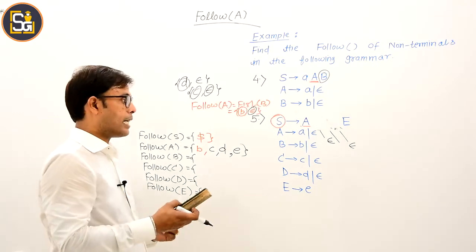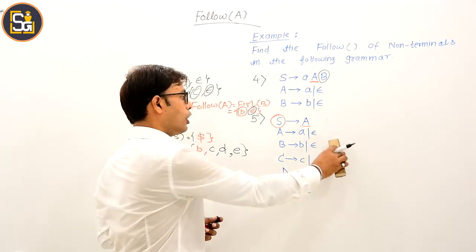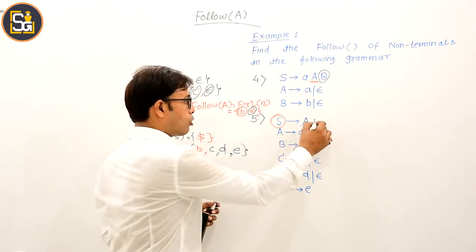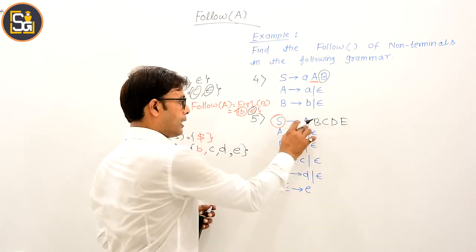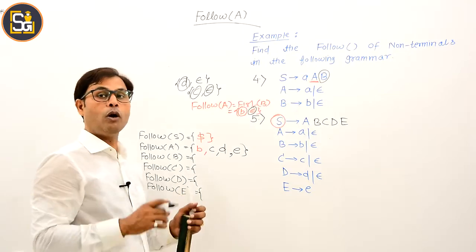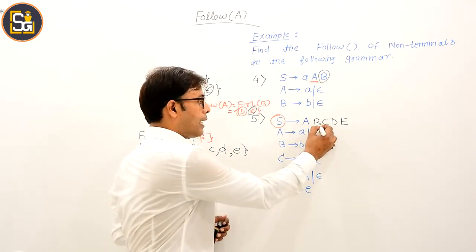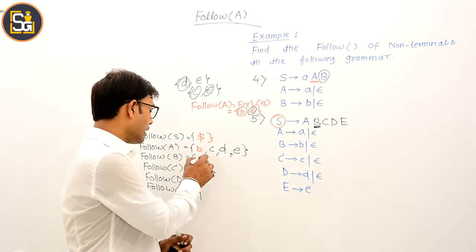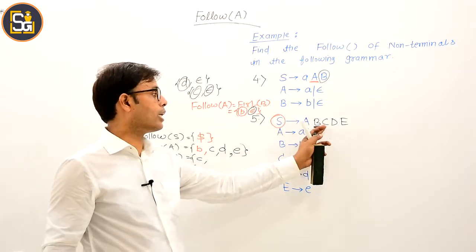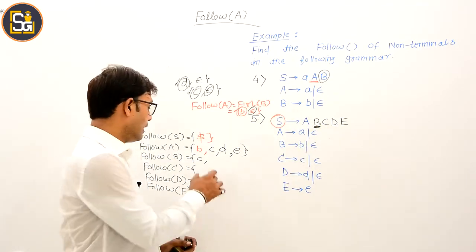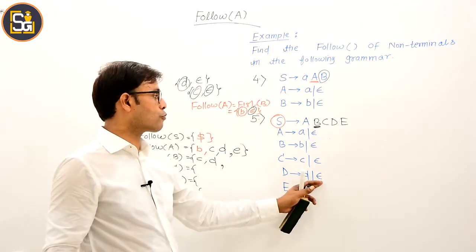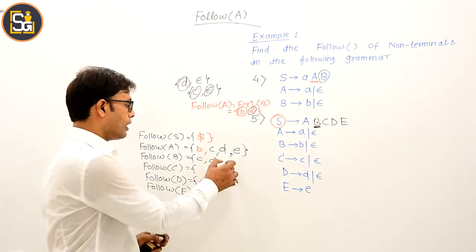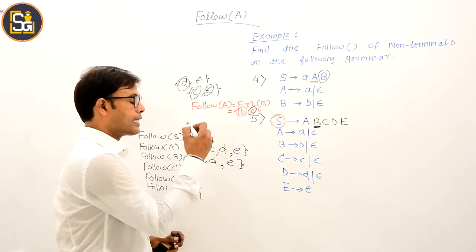Now for the remaining non-terminals B, C, D, E: FOLLOW of B — from FIRST(C) we get c; since C has epsilon, D comes forward giving d; since D has epsilon, E comes forward; and FIRST(E) gives e. So FOLLOW of capital B equals {c, d, e}.